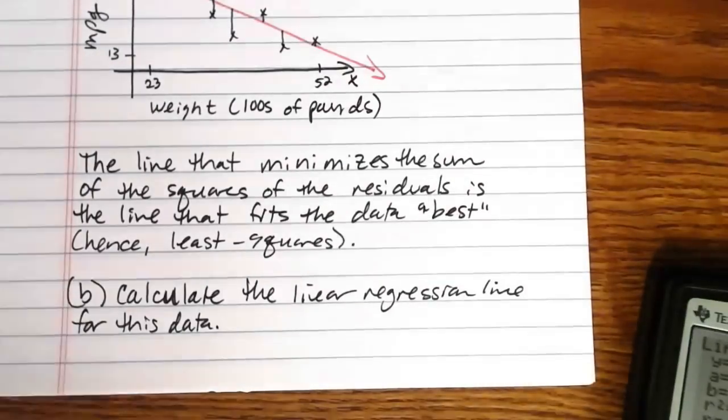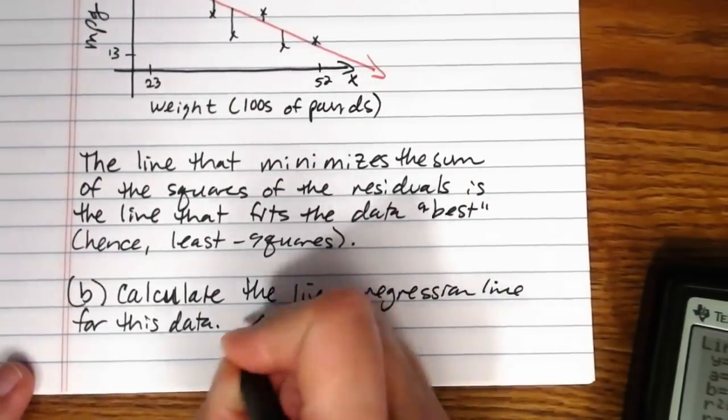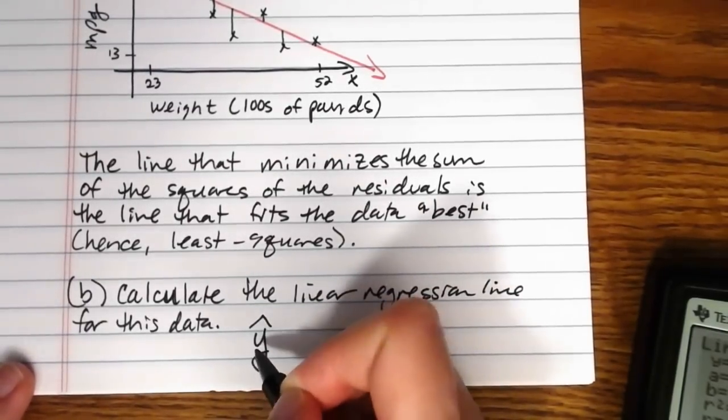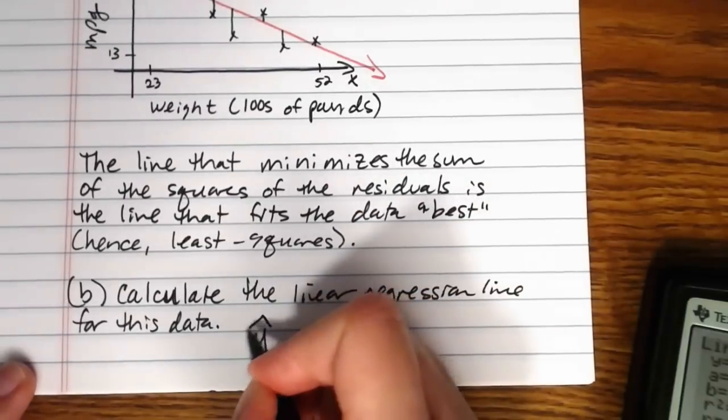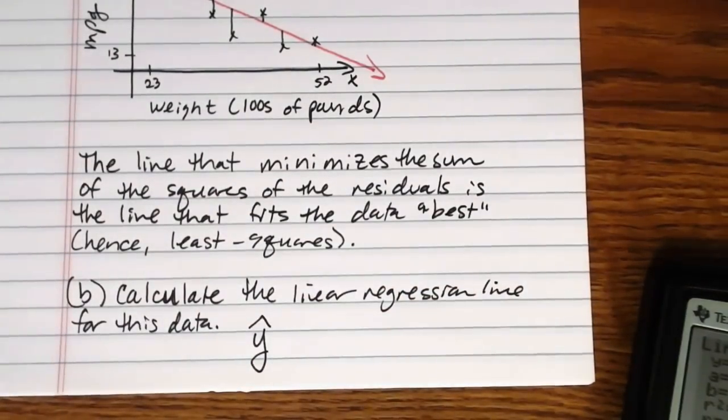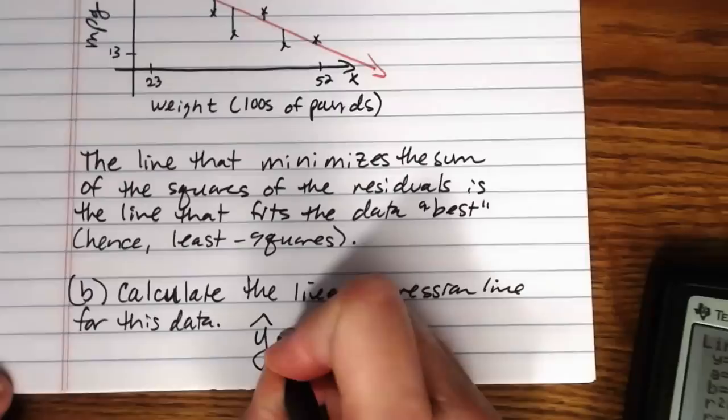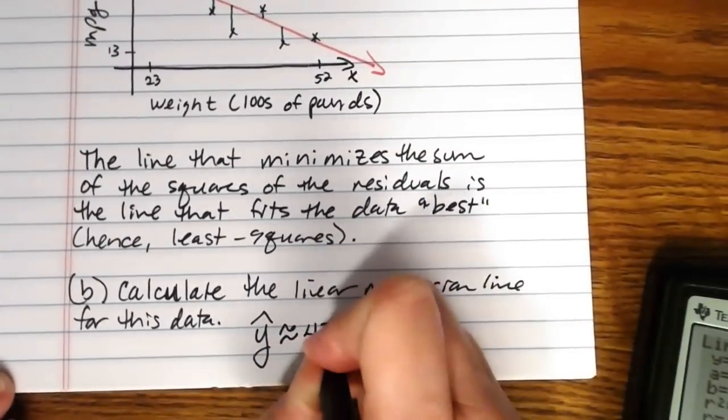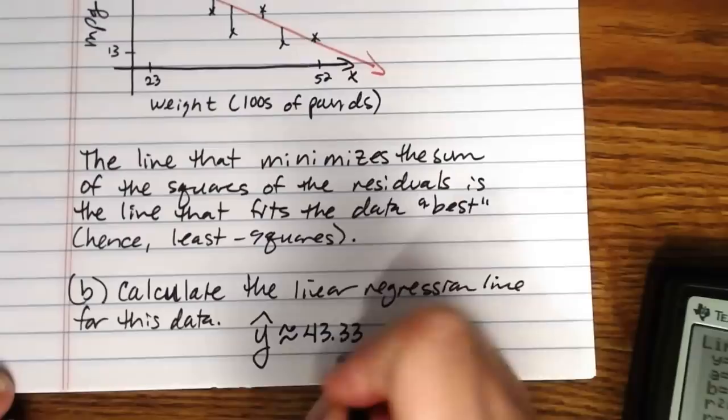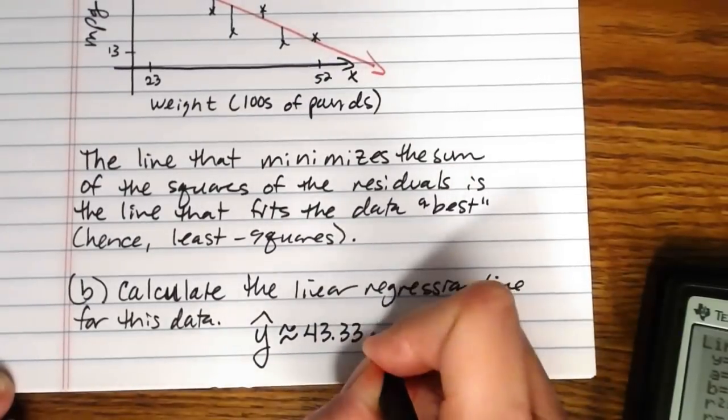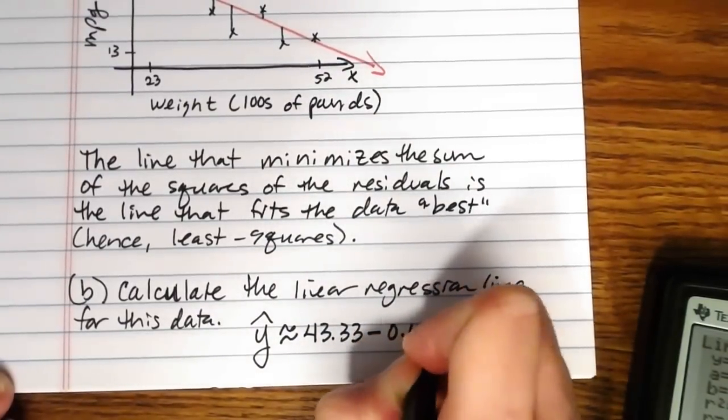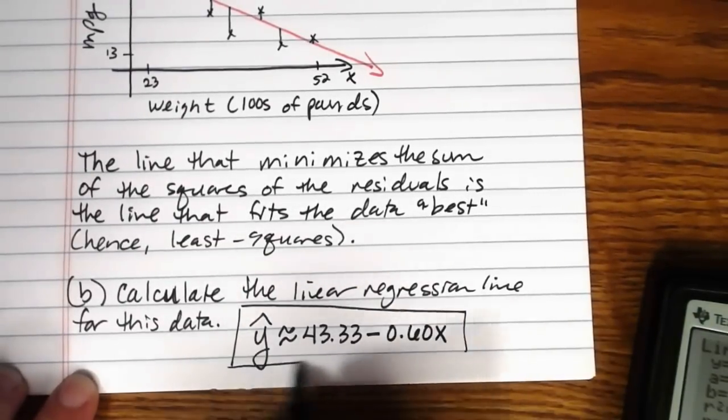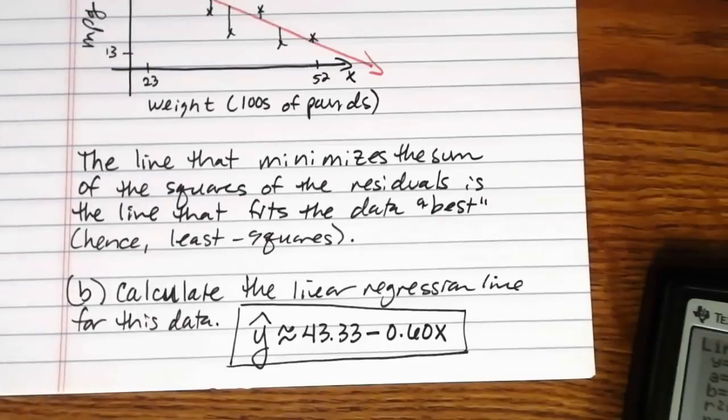And your calculator doesn't put a hat on the y but it should have a hat on it. This line will allow us to predict y values based on x's and you always want to put a hat over values that have been predicted. Okay, so y hat is approximately equal to 43.33 and then it says plus bx but our b is negative, so minus 0.60x. And that's our line of best fit for the data.